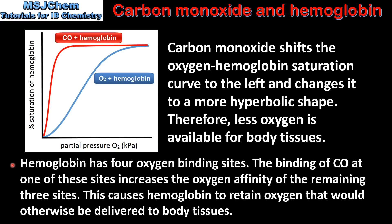Haemoglobin has 4 oxygen binding sites. The binding of carbon monoxide at one of these sites increases the oxygen affinity of the remaining 3 sites. This causes haemoglobin to retain oxygen that would otherwise be delivered to body tissues.